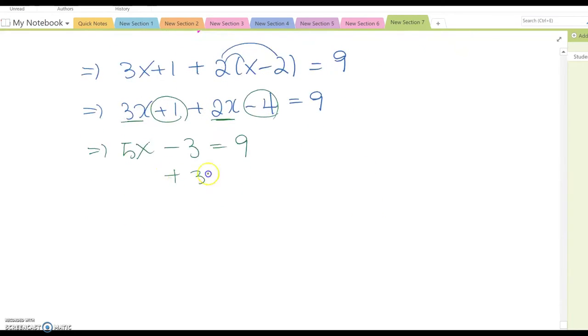Combine 3, then 5x equal to 12. Divide by 5. Therefore, x equal to 12 over 5.